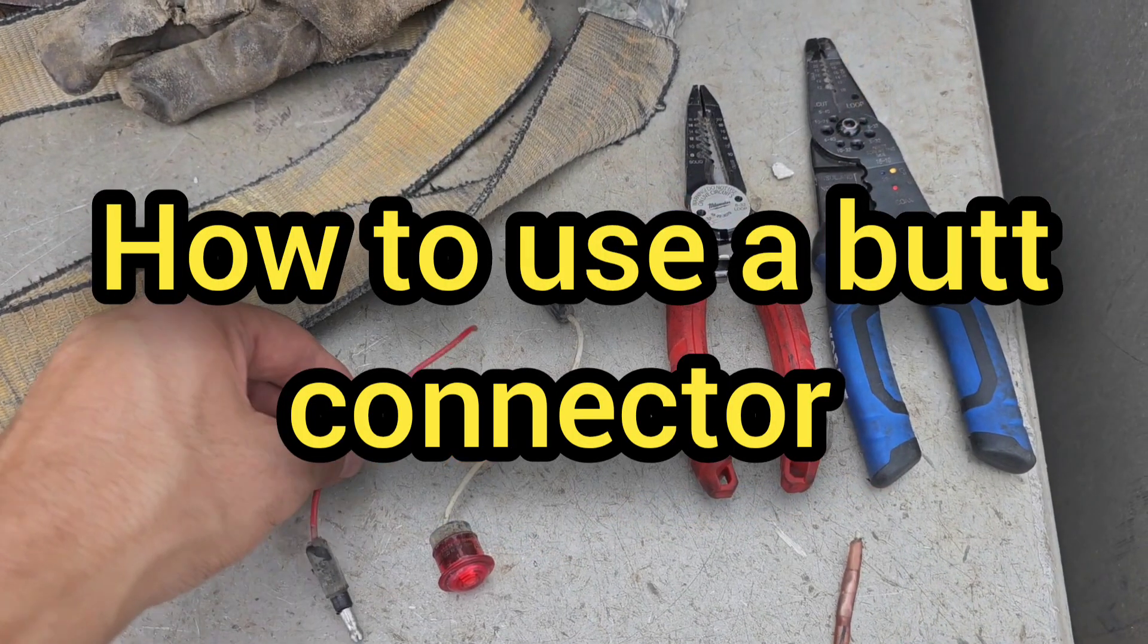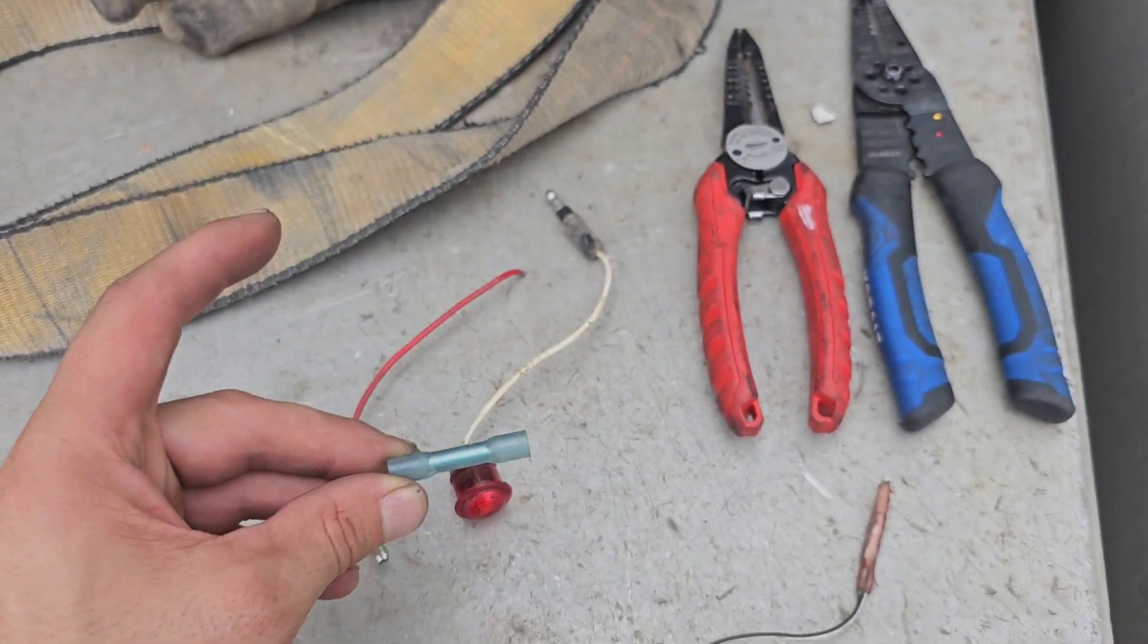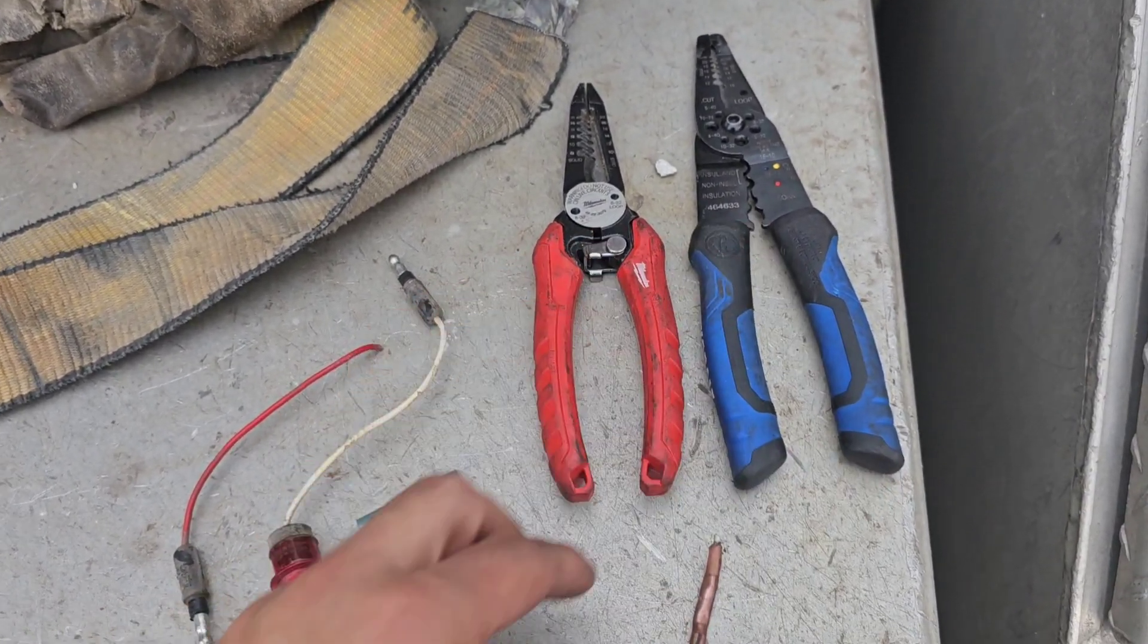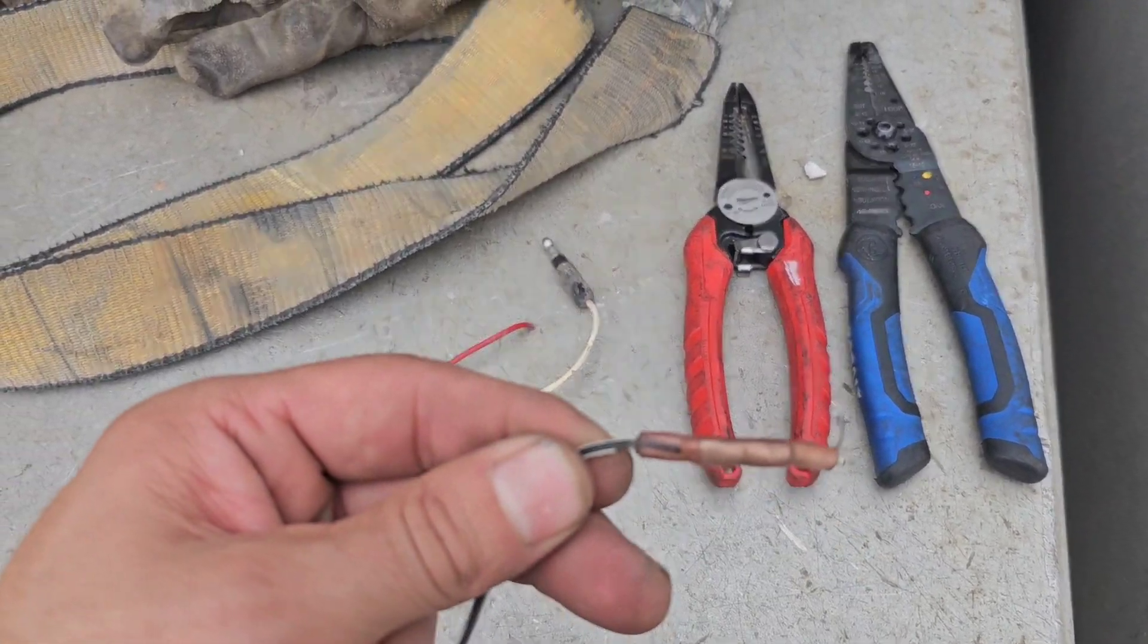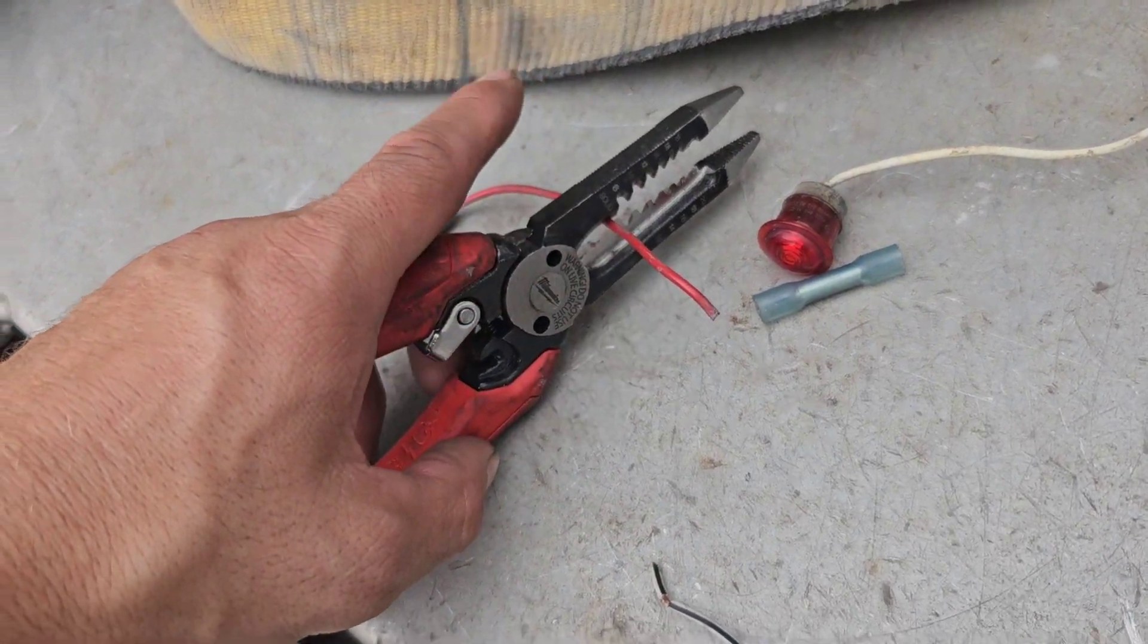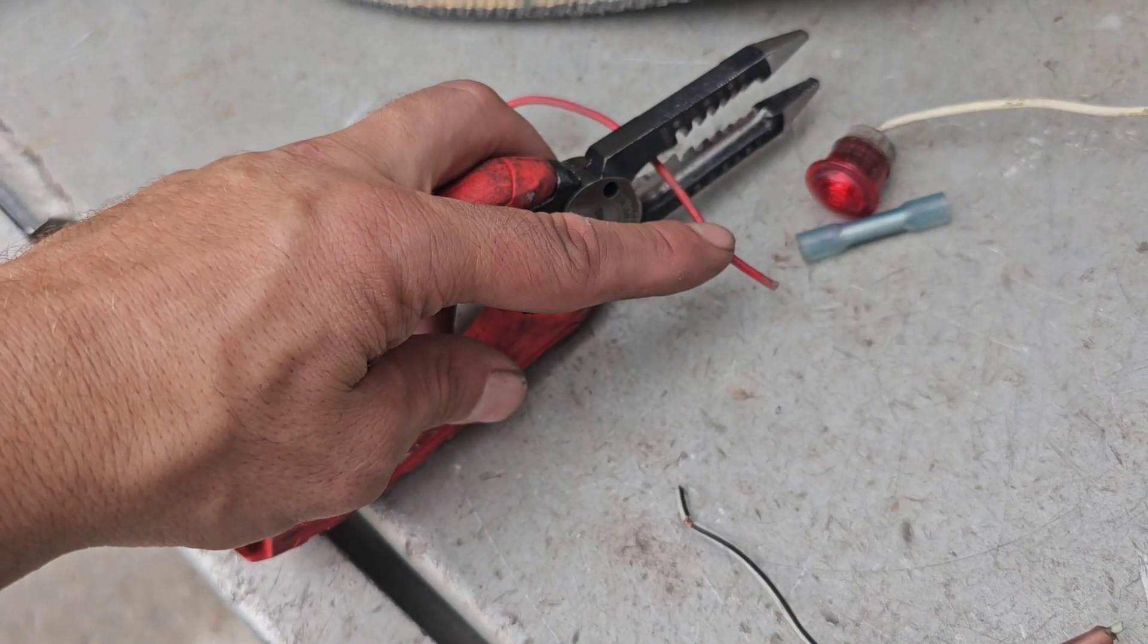To add a buck connector to connect two pieces of wire - this is what a buck connector looks like. You need wire strippers and crimpers. This is what it's gonna ultimately look like when we're done. The first thing you're gonna do is cut the wire where you need to cut it, or if it's right at the end, just cut a centimeter off.